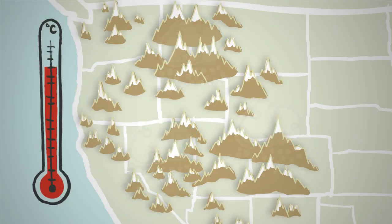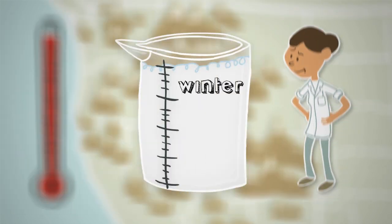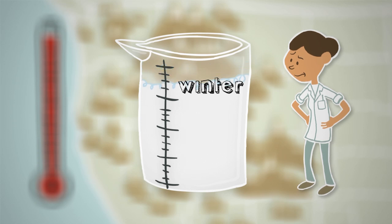As temperatures rise, there's less snow, and the snow that does fall melts faster and earlier in the spring. The result, scientists have measured steadily shrinking snowpack across the mountain west.